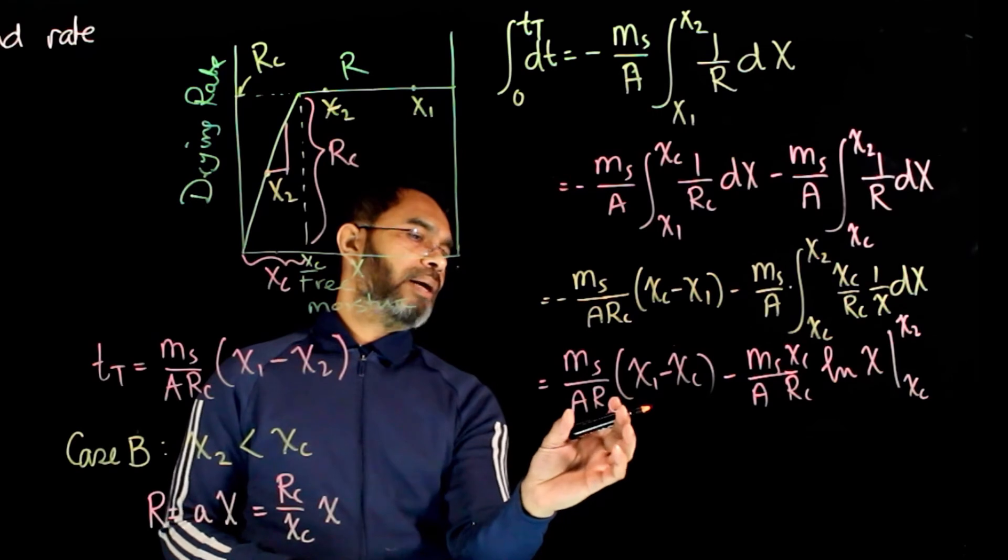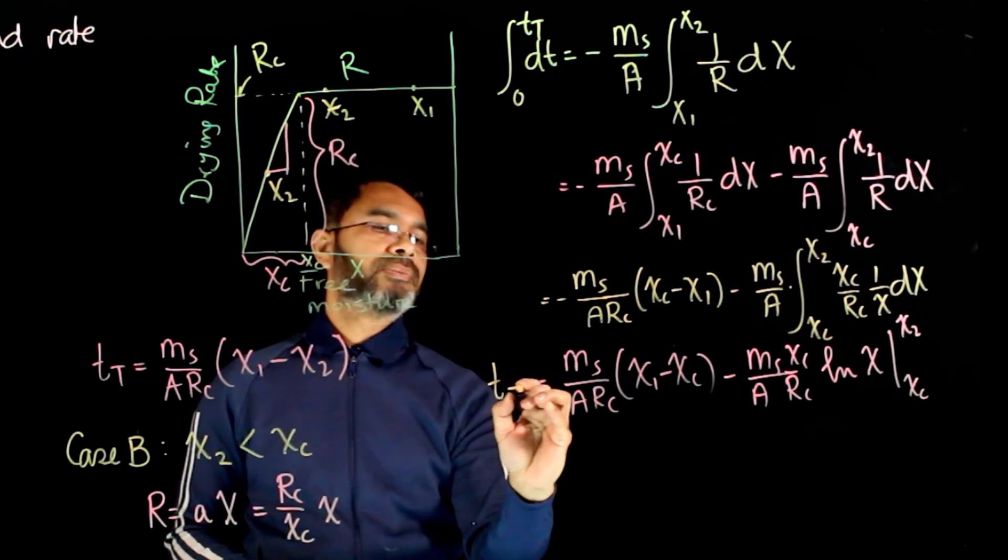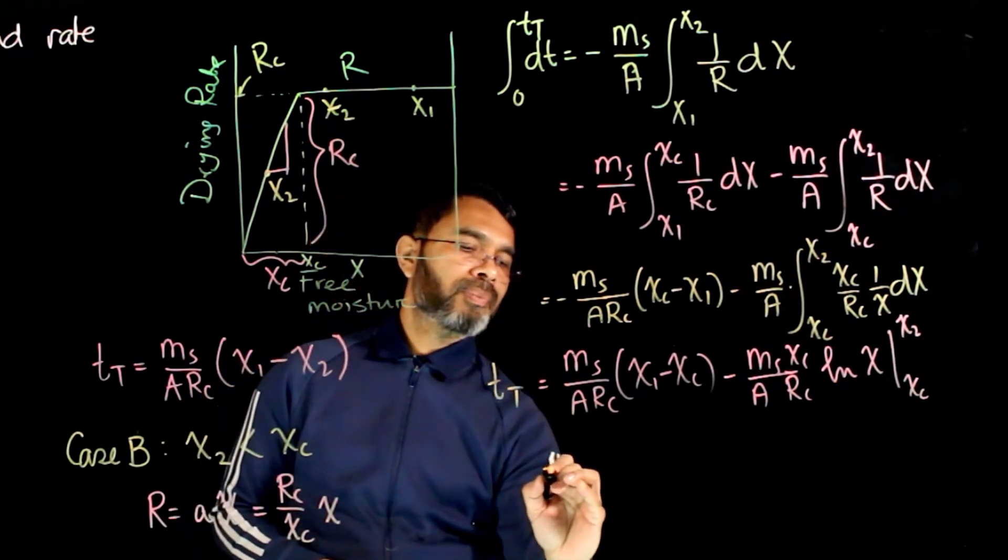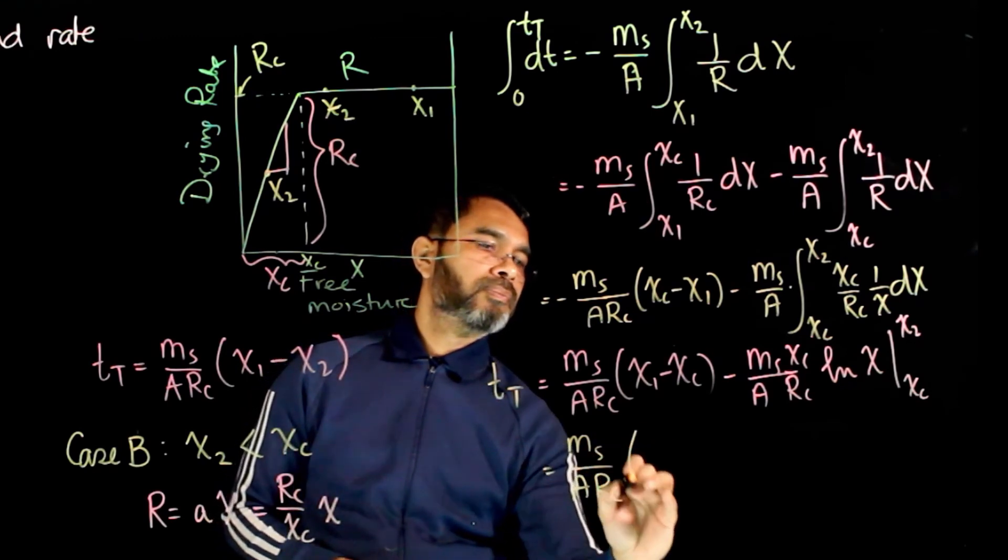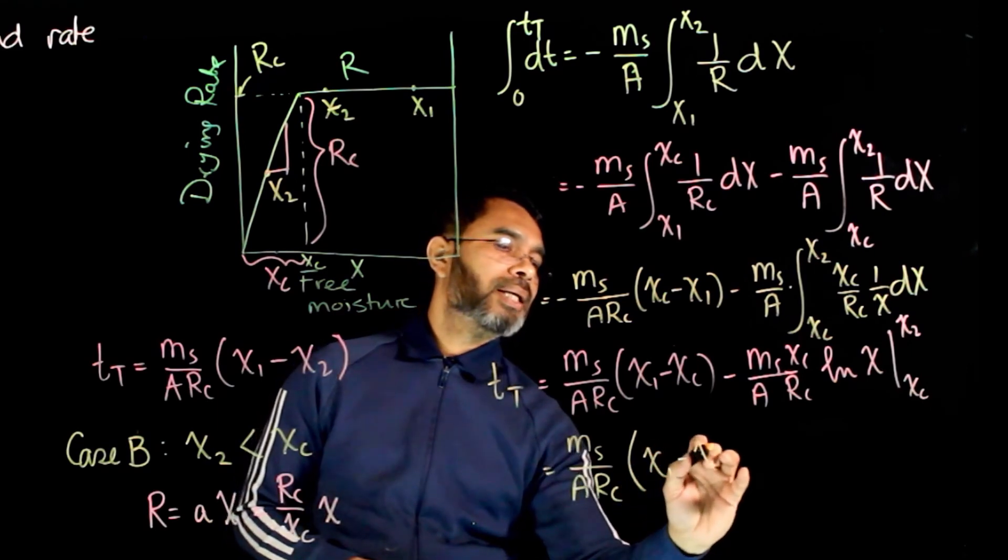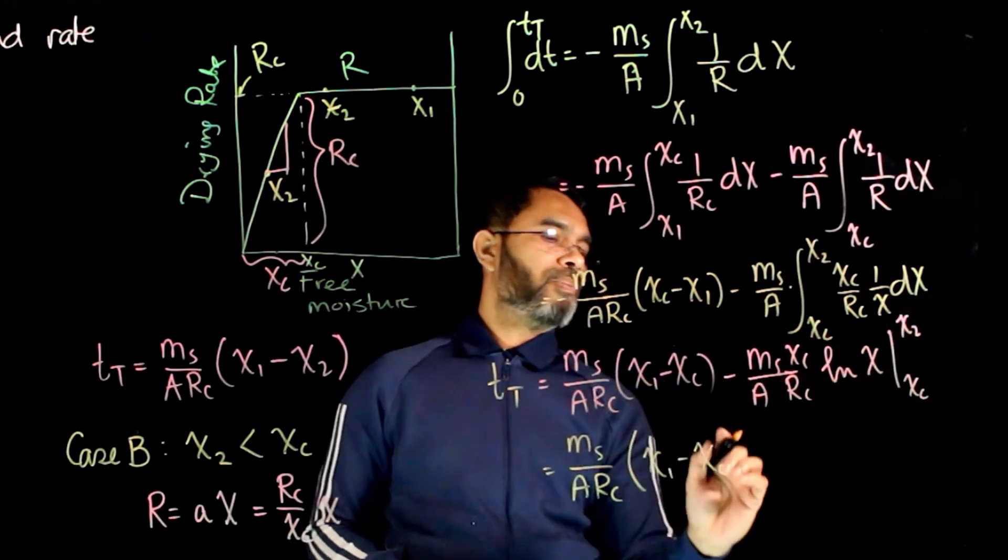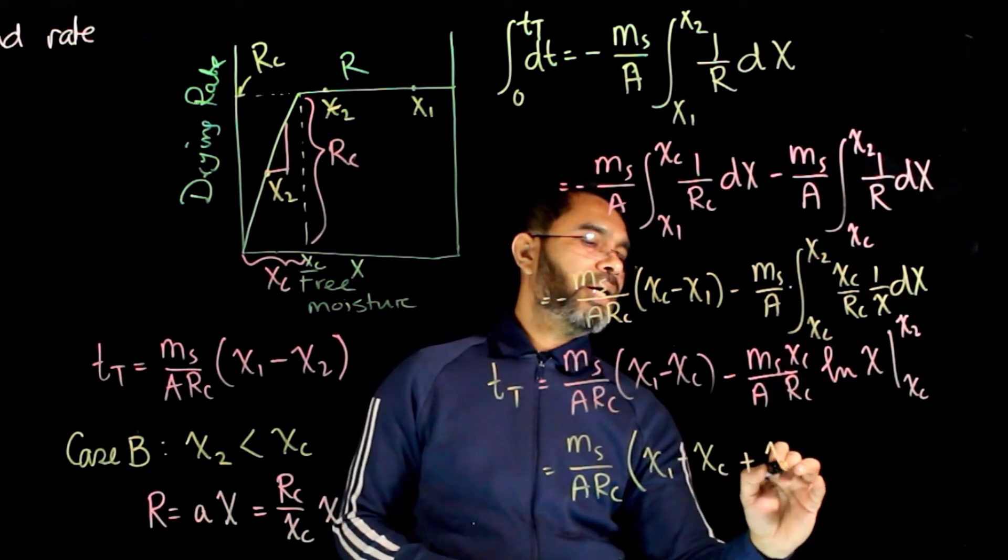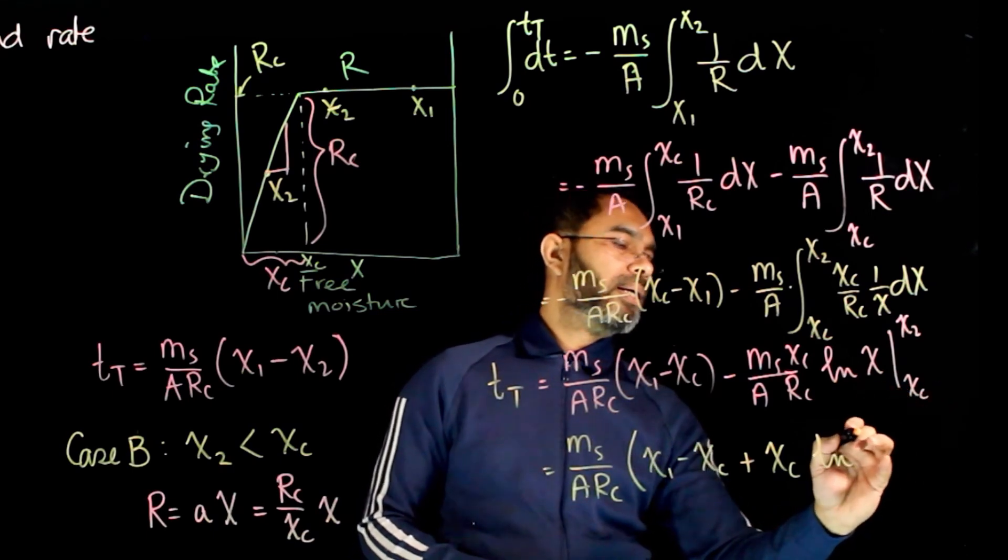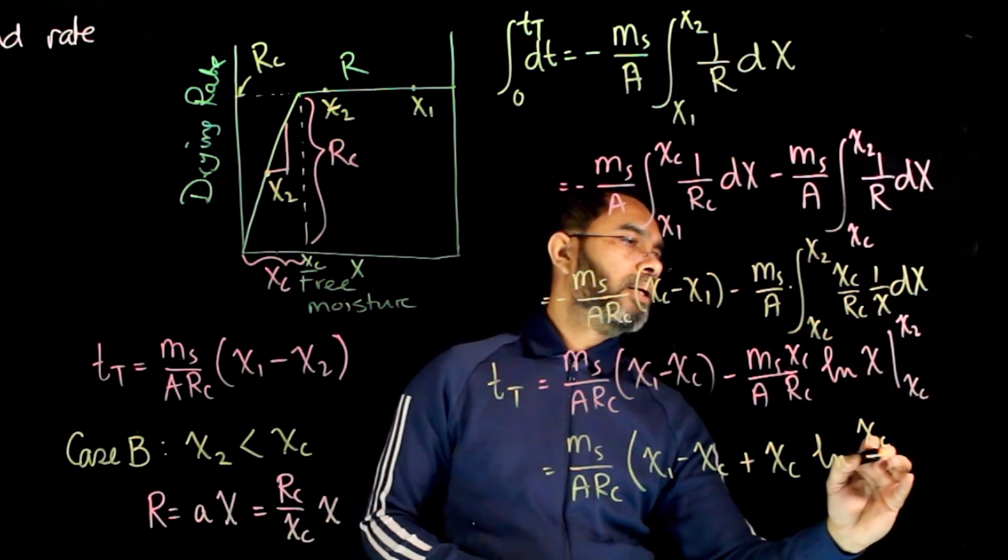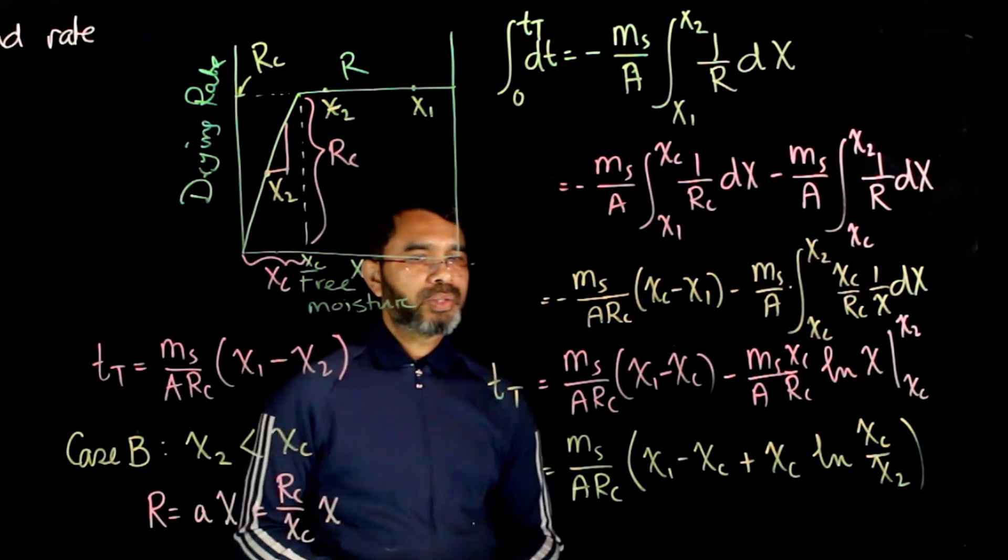Now, just further simplify, this term is common on both sides, right? So this side, if you integrate it, simply becomes dt, total time, which will become ms over a rc, x1 minus xc, and we will simply change the two limits to make this positive, plus you'll have xc over here, ln, so upper limit and lower limit...